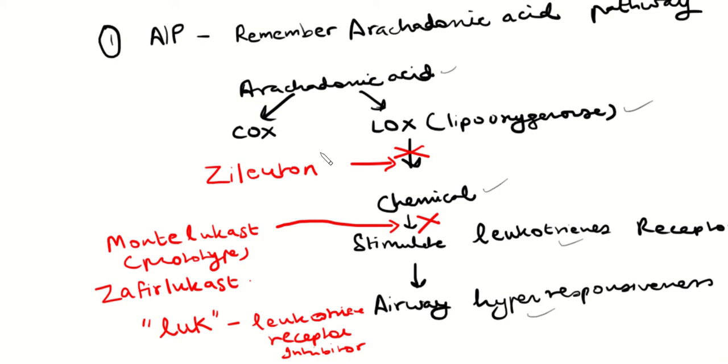What are the two types of drugs? So the first drug is the one that prevents lipooxygenase from creating the chemical that then stimulates the receptor. So that's zileuton.